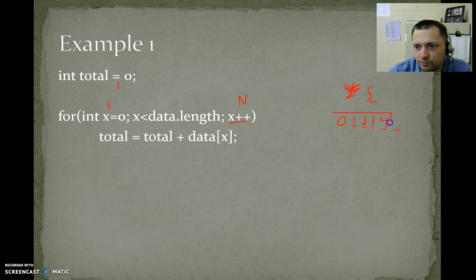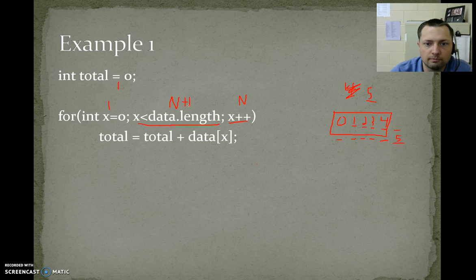Now if our list is 0 through 4, this inner part, is 0 less than the number? Yes. Is 1 less than the length? Yes. Is 2 less than the length? Yes. Is 3 less than the length? Yes. Is 4 less than the length? Yes. Then we check 5. Is 5 less than the length? No. So we have 1, 2, 3, 4, 5, 6 checks. That's why this one is n plus 1, because it also has to occur for the fail. And then the loop actually did not execute n plus 1 times. One of those was the fail that stopped it. So the inside would happen n times.